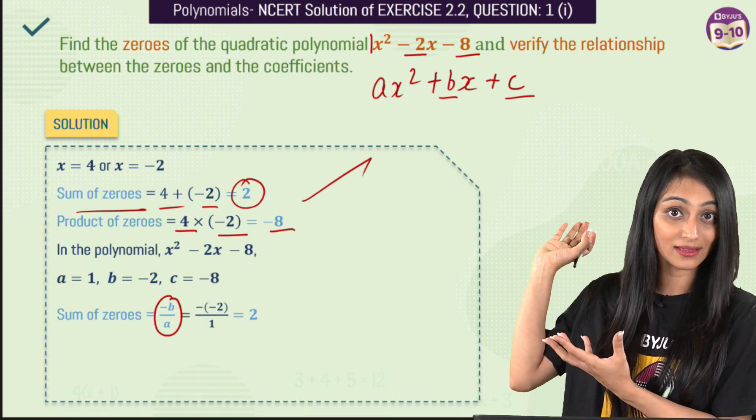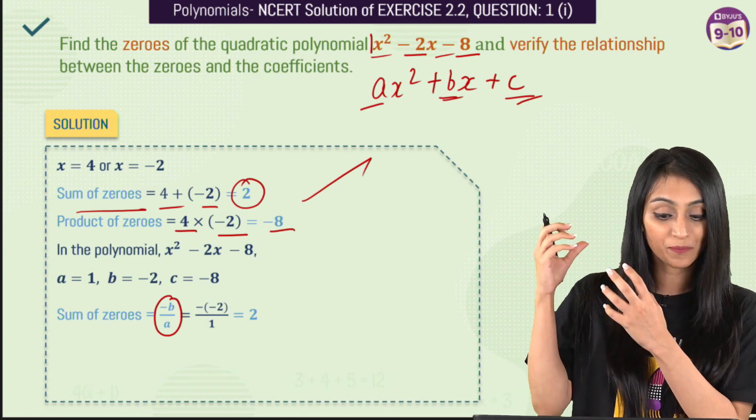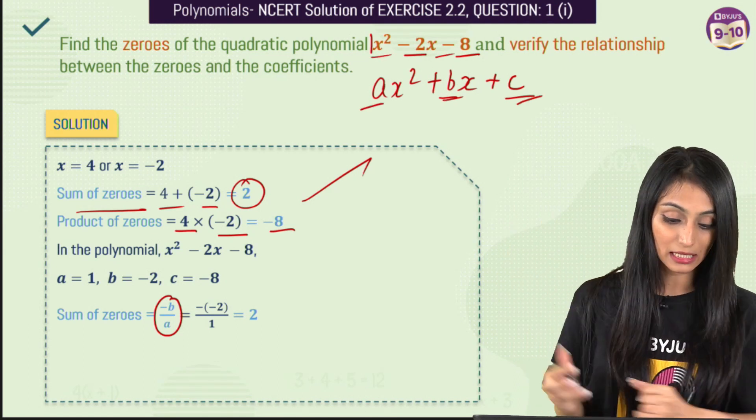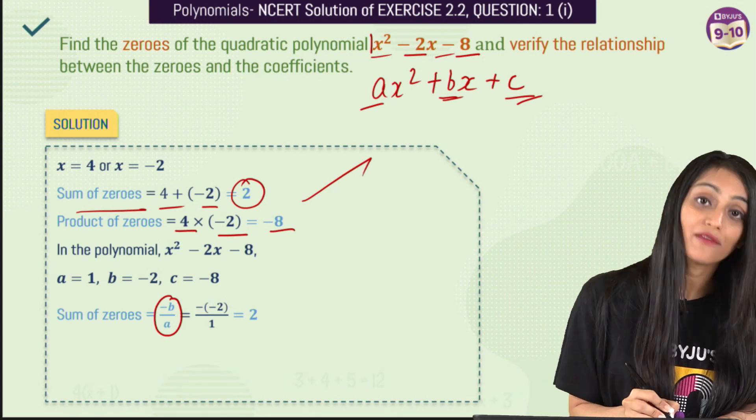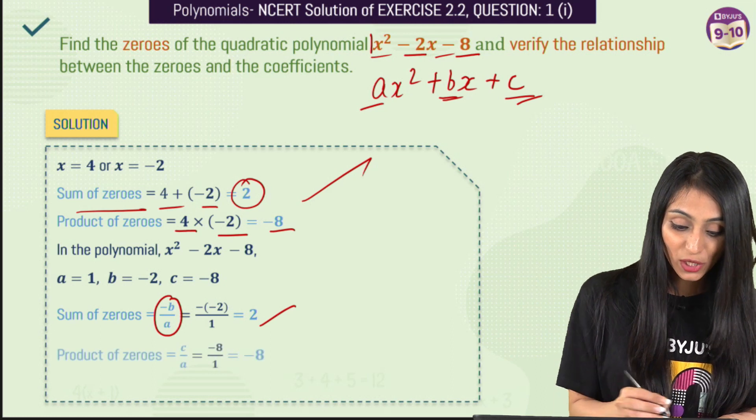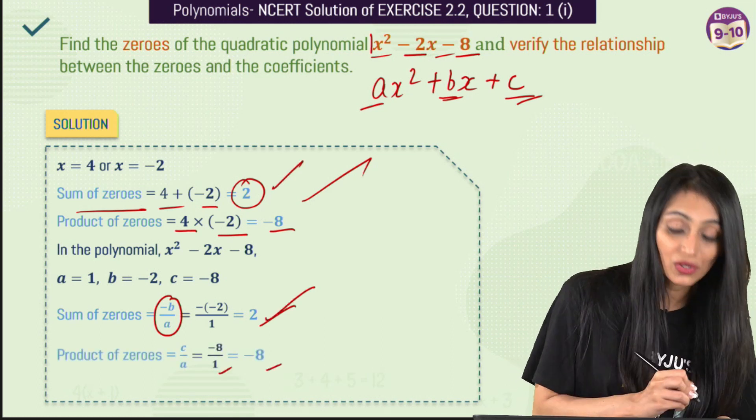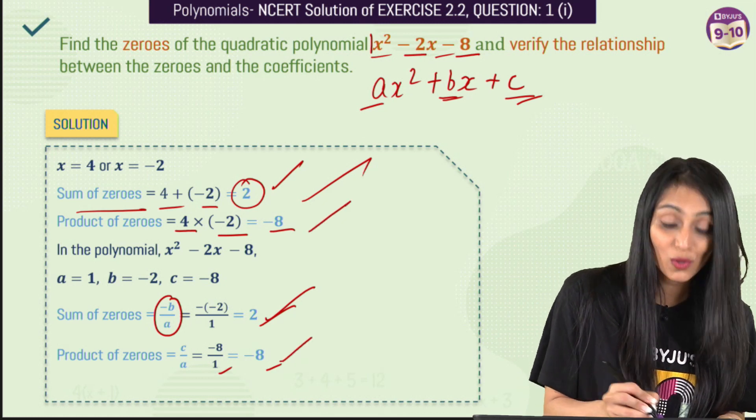Coefficients over here in this general form of the quadratic polynomial you can see that's a, b, c. Similarly here the coefficients are 1, minus 2 and minus 8. Now so minus b by a from here it's going to be minus of minus 2 by 1 which is 2 and product of zeros would be minus 8 by 1, that's minus 8 and you can see that sum of zeros over here that is same product of zeros is also same.